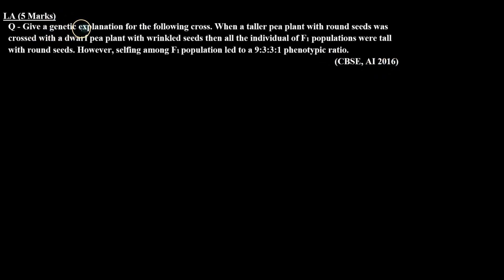So the question is give a genetic explanation for the following cross: when a taller pea plant with round seeds was crossed with a dwarf pea plant with wrinkled seeds, then all the individuals of F1 populations were tall with round seeds.